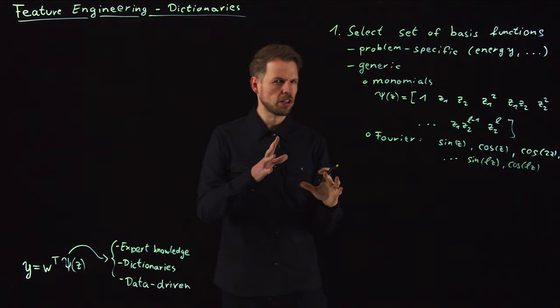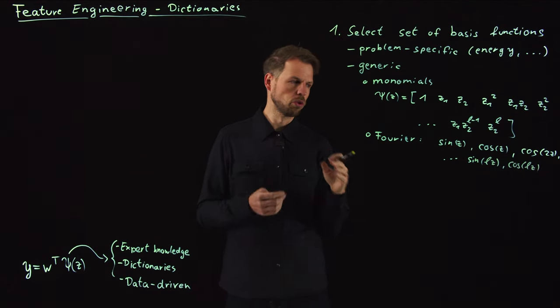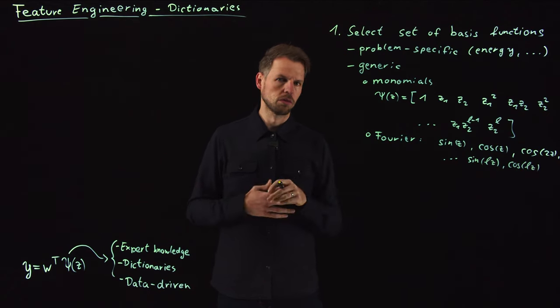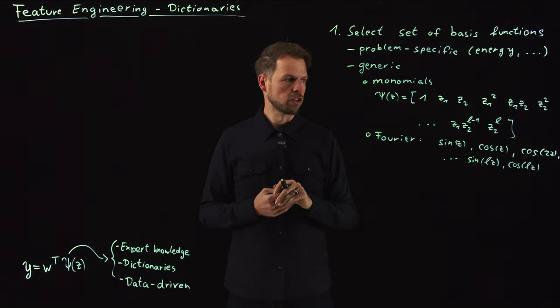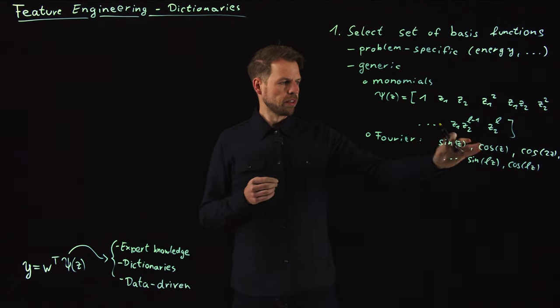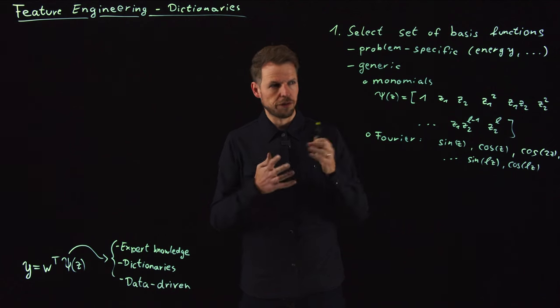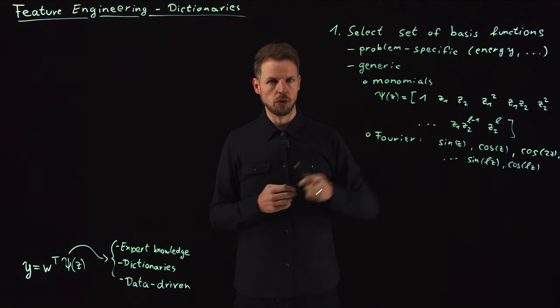And the argument is essentially the same. A combination of sines and cosines allows you to approximate any function which is known as the Fourier series expansion. These are even orthogonal to one another. So this means you have fewer stability issues than with these monomials.